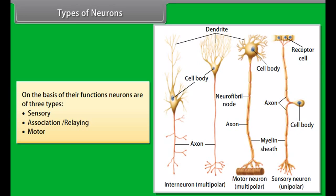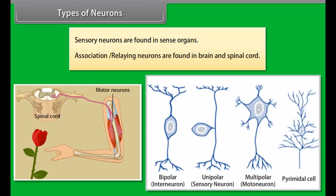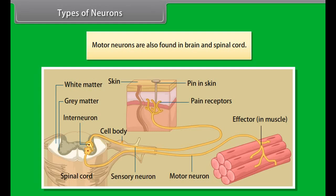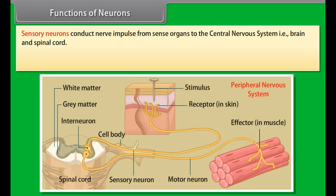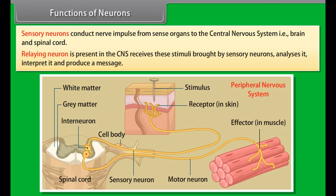The axon has one or two additional coverings: the myelin sheath and the Schwann sheath. The myelin sheath around the axon is an insulating and protective sheath. At certain places, the myelin sheath is absent, and that area is known as the node of Ranvier. The Schwann sheath covers the whole axon, including the myelin sheath. The axon bears terminal end fibers which end in synaptic knobs.